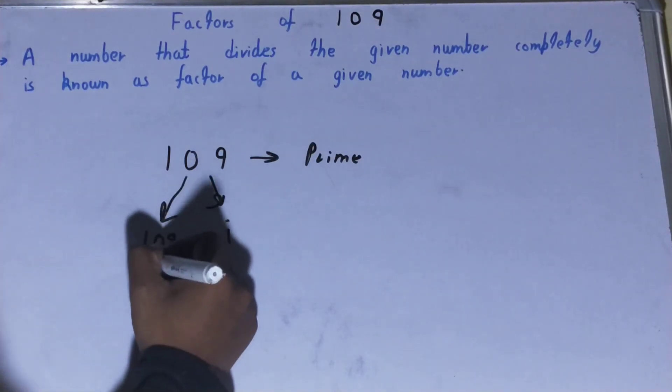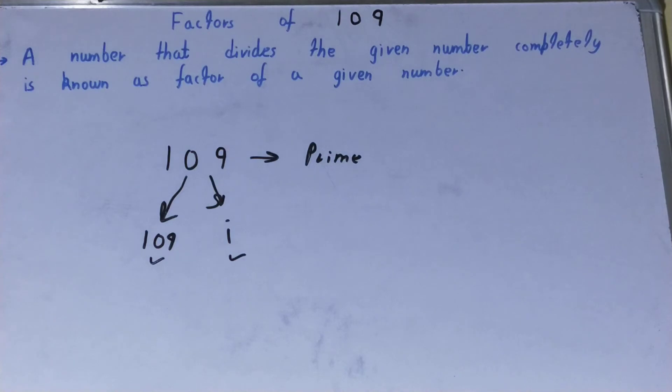The factors of 109 will be 109 and 1. So this was all about factors of 109. If you found the video helpful, please do like the button to consider subscribing and thanks for watching.